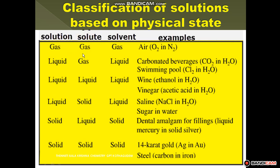We have one example in this slide — it is an example for gas in gas, in which gas is used as both solute and solvent. The best example for gas in gas solution is air. Air is a combination of many gases. Here the example is O2 and N2, where O2 is present in a greater amount than N2. The component in lesser quantity is the solute and the component in larger quantity is the solvent.